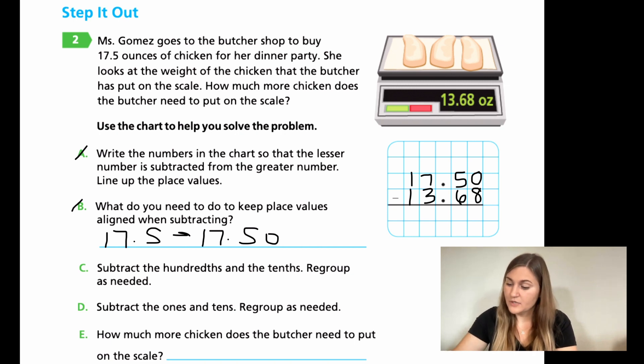Alright, for C, subtract the hundredths, then the tenths. So the 0 minus 8 and the 5 minus 6. You're going to have to regroup for both. So 0 minus 8, I can't do, so I'm going to go next door to the 5, and I'm going to borrow. So I'm making the 5 a 4, and that's going to make the 0 a full 10. So then 10 minus 8 is 2.